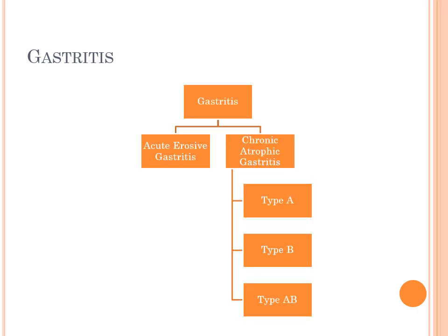This classification divides gastritis into two main headings: acute erosive gastritis and chronic atrophic gastritis. Chronic atrophic gastritis is further divided into Type A, Type B, and Type AB, which is a combination of both Type A and Type B.